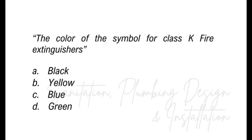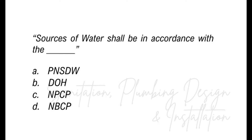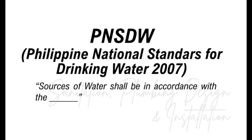What is the color of the symbol for Class K fire extinguishers? Is it A, black; B, yellow; C, blue; D, green? The answer is black. Sources of water shall be in accordance with what? A, PNSDW; B, DOH; C, NPCP; D, NBCP? The answer is PNSDW, or Philippine National Standards for Drinking Water 2007. Sources of water shall be in accordance with PNSDW, or Philippine National Standards for Drinking Water 2007.